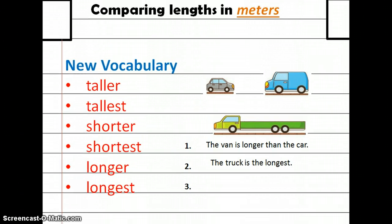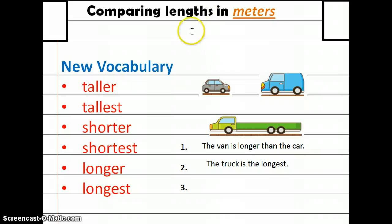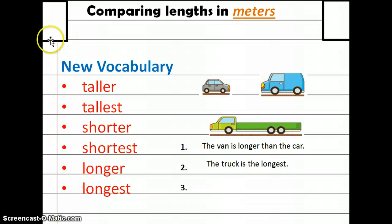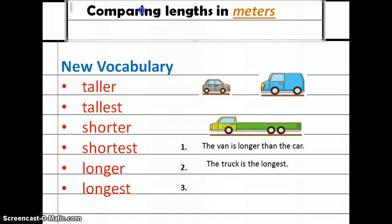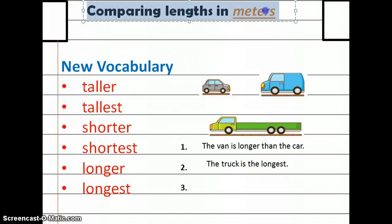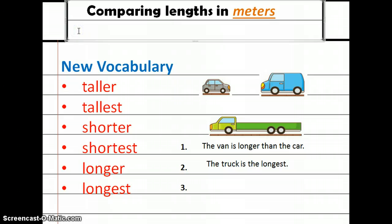This probably looks very familiar. You'll need your small math notebook. Just like in class, you're going to draw two small squares at each corner and write the goal of the lesson: comparing lengths in meters. Go ahead and write that goal right now. If you need to, push pause and continue when you're ready.